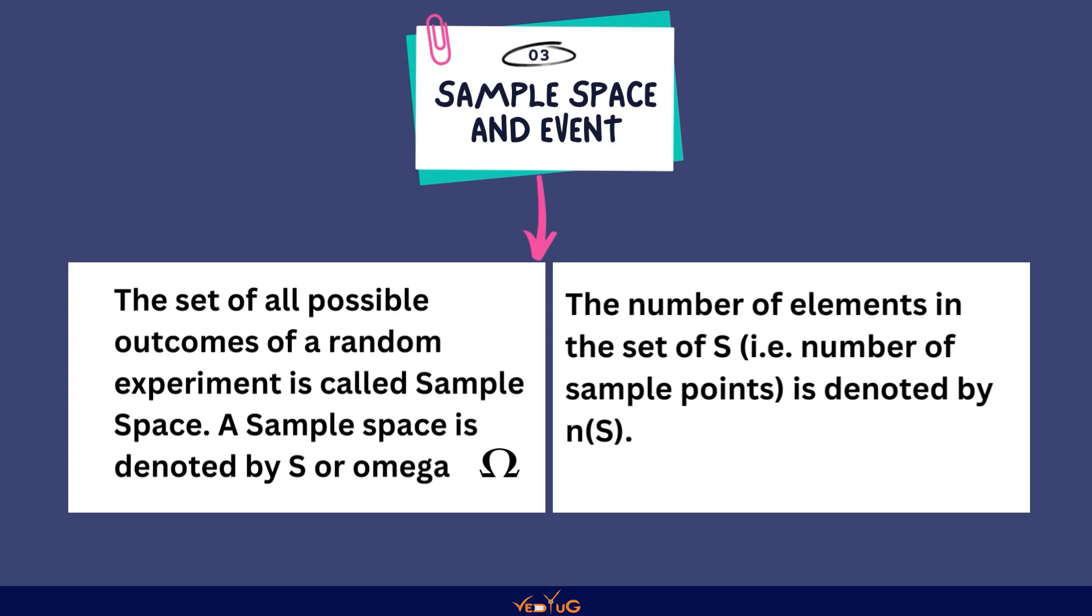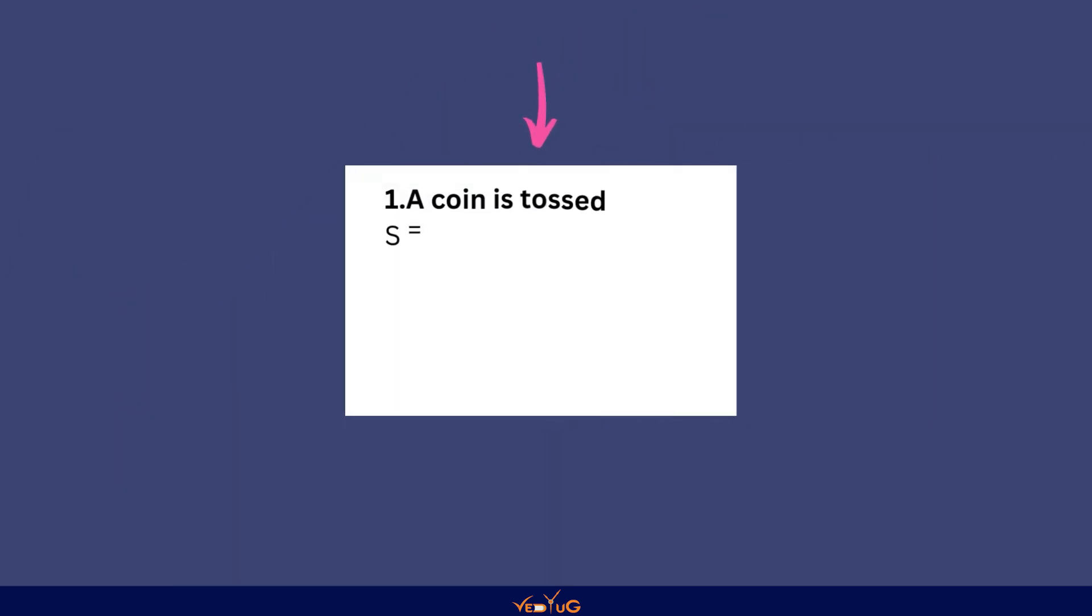अब चलो चलते हैं example की तरफ. यहाँ पर हम देखते है, a coin is tossed का sample space or sample points, and two coins are tossed का sample space or sample points.